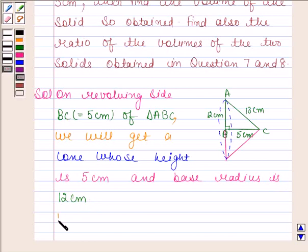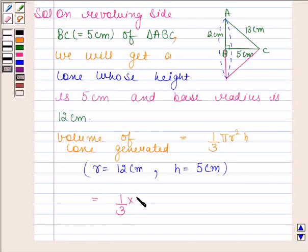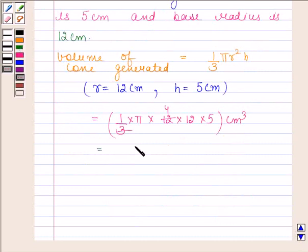Now we will find the volume of cone generated. Volume of cone generated is equal to 1/3 πr²h. Now here, radius r is equal to 12 cm and height h is equal to 5 cm. By substituting the values of r and h, we get 1/3 × π × 12 × 12 × 5 cm³. On cancelling 12 by 3, we get 4. So this is equal to 240π cm³.